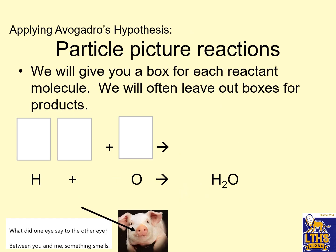Let's see why it works for us. In particle picture reactions, we give a box for each reactant molecule and often leave out boxes for the product. Oxygen is red and filled in; hydrogen is an open circle. So let's draw some hydrogen and oxygen to make H2O.